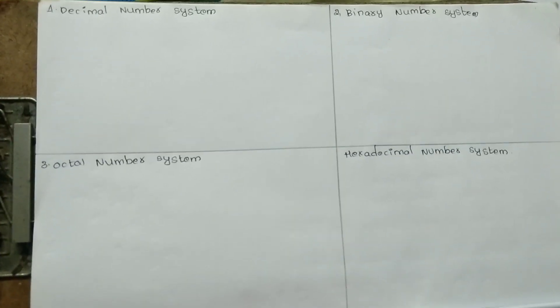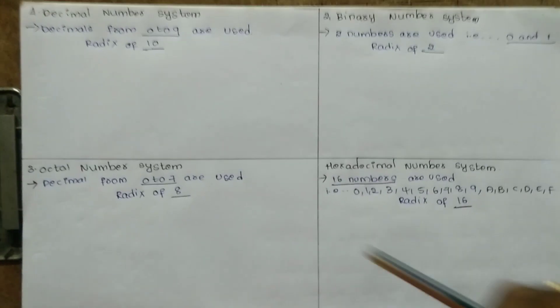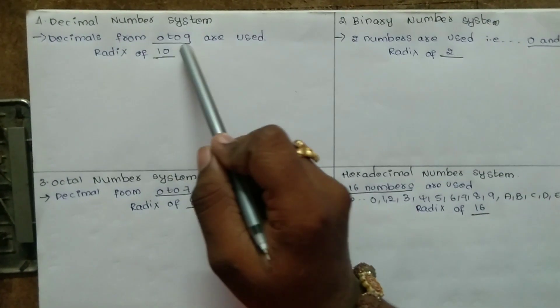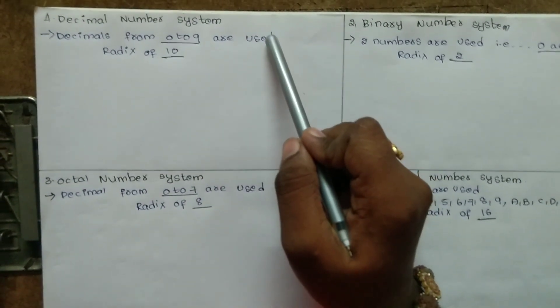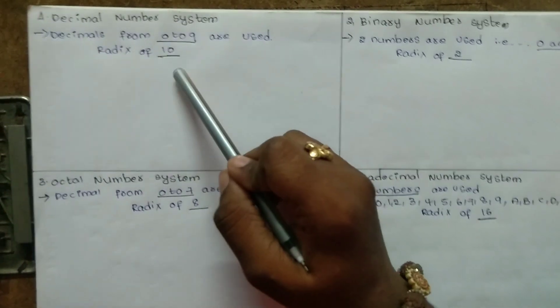For better understanding, I'll explain these four blocks. When we go to the detailed matter, Decimal Number System uses decimals from 0 to 9, and radix or suffix is 10.